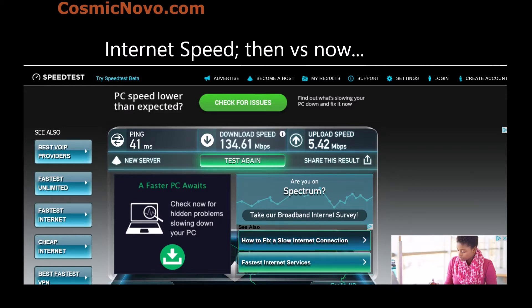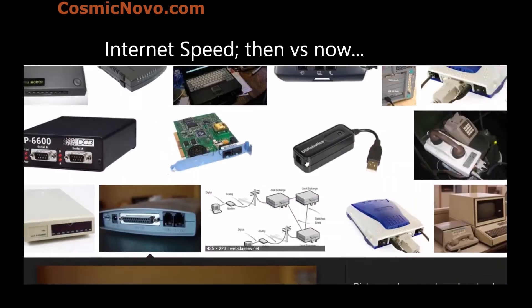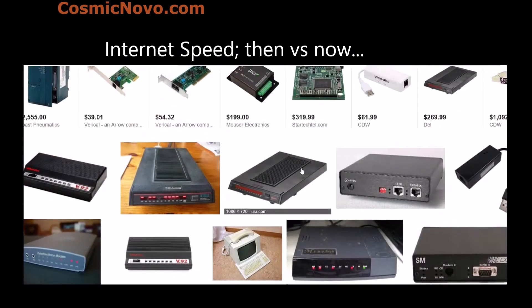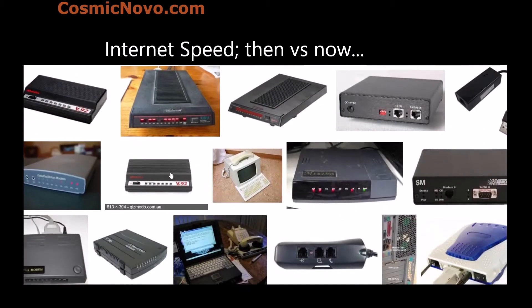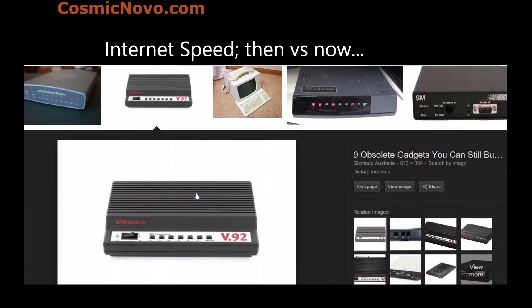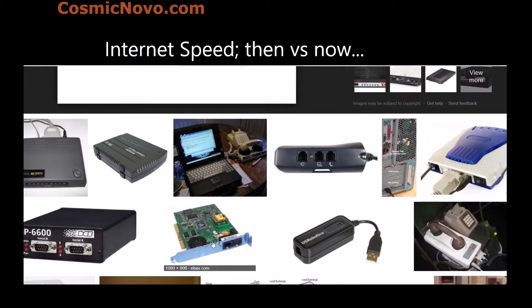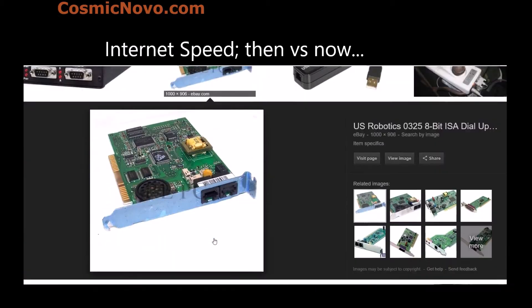During those times, the only way to connect to the internet was via modem — and I'm not talking about a regular modem, I'm talking about a dial-up modem. These dial-up modems you had to connect to your phone line, and through your phone line you would use these modems. Here's an example: this is an external modem, and this is an internal type of modem.